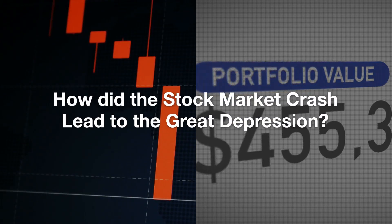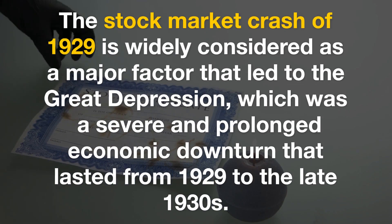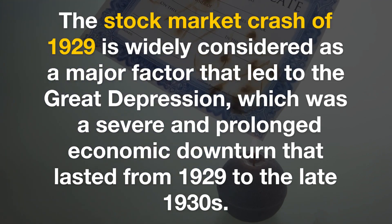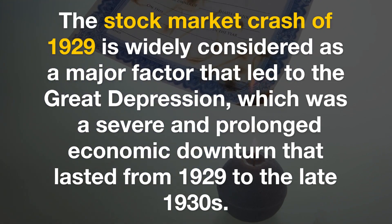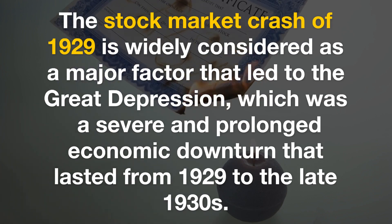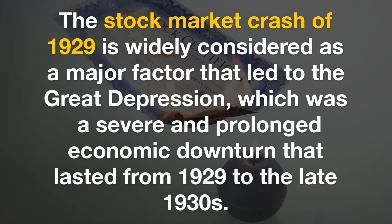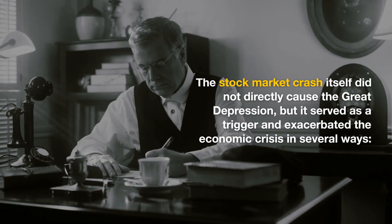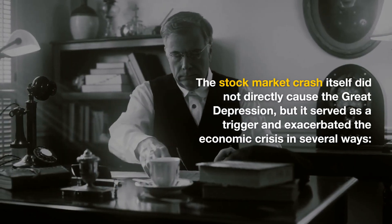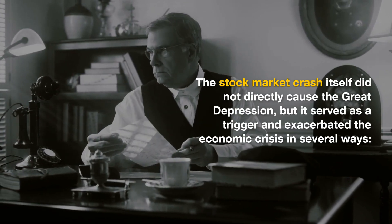How did the stock market crash lead to the Great Depression? The stock market crash of 1929 is widely considered a major factor that led to the Great Depression, which was a severe and prolonged economic downturn that lasted from 1929 to the late 1930s. The stock market crash itself did not directly cause the Great Depression, but it served as a trigger and exacerbated the economic crisis in several ways.